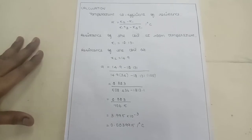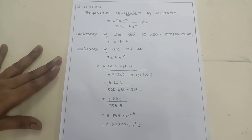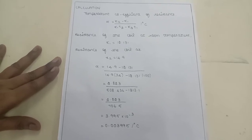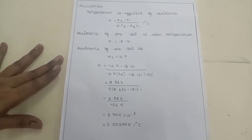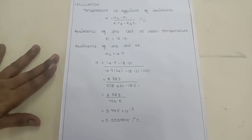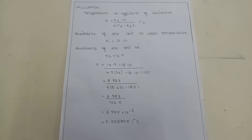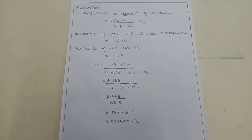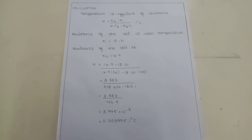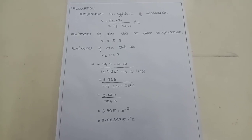The temperature coefficient of resistance of the copper coil is then calculated using the formula: alpha = (X2 − X1) / (X1·T2 − X2·T1). By substituting the values, alpha is calculated as 0.0039 per degree Celsius. So the temperature coefficient of resistance of the copper coil determined using this experiment is 0.003995 per degree Celsius. I hope you have understood how to calculate the temperature coefficient of resistance of a copper coil using a potentiometer. Thank you for watching.